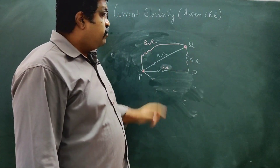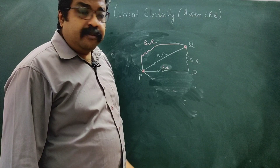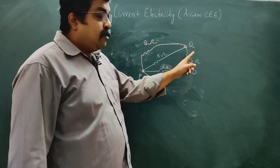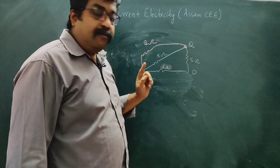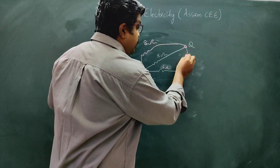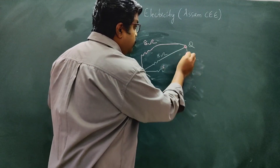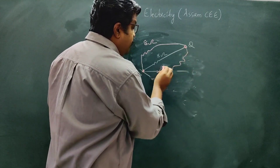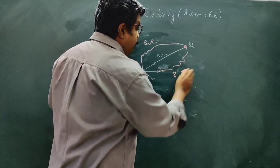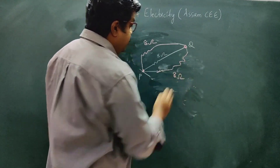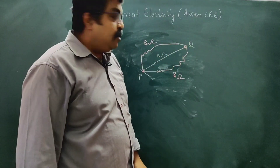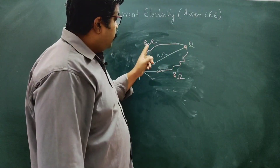Three ohm plus five ohm is eight ohm. So the equivalent resistance between P and Q is 8 ohm.